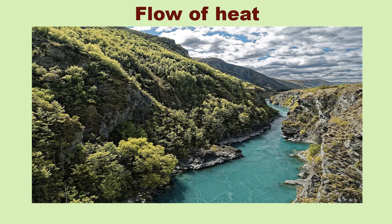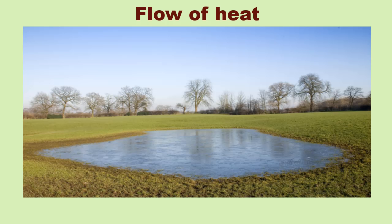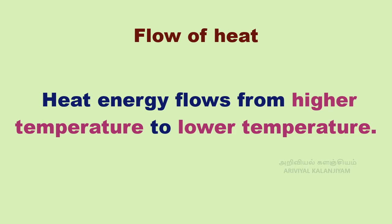Flow of heat. Water flows when there is a difference in the levels of water in different places. It doesn't matter if there is more water in one place or another. Water from a puddle can flow into a reservoir or the other way around. The temperature of an object is like the water level — it determines the direction in which heat will flow. Heat energy flows from higher temperature to lower temperature.